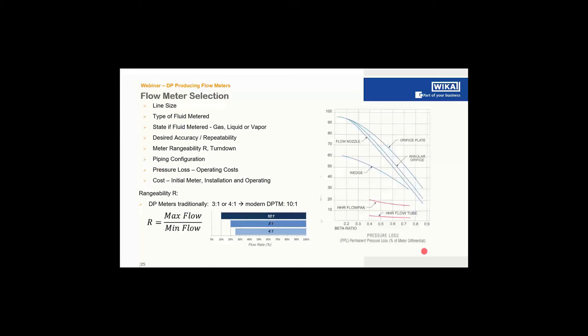A pressure loss comparison chart shows that the orifice plate has the highest permanent pressure loss, depending on beta ratio — a small beta ratio (small bore) gives high pressure loss, a large beta ratio (large bore) gives less. Flow nozzles are somewhat more efficient, wedge meters slightly better due to higher viscosity suitability and larger flow stream area. Flow meters with curved inlet sections (venturis, flow tubes) — the most expensive — have very little permanent pressure loss even over a fairly large beta range.